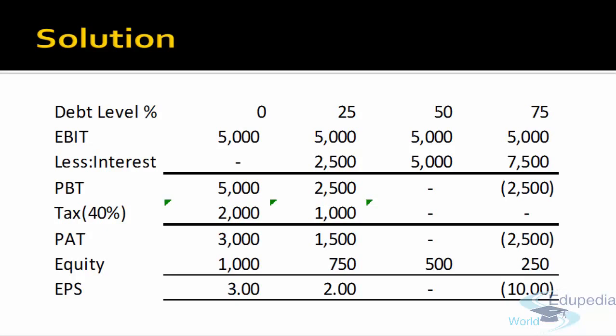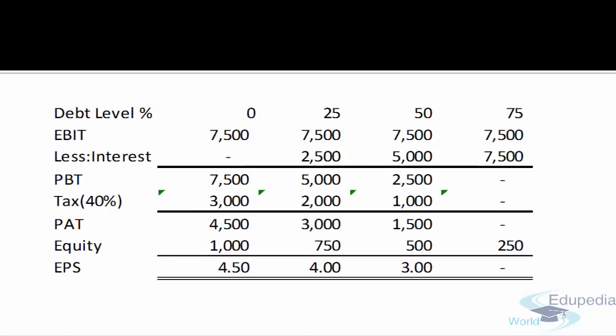But what if the EBIT of the company rises to 7,500? Note that the EPS of the company again falls, since the company is not able to cover the interest portion at 75% debt — the EBIT is just equal to interest. So 7,500 is the financial break-even point for the company, where the company does not have any earnings available to equity shareholders; all its earnings are used to repay the interest portion.